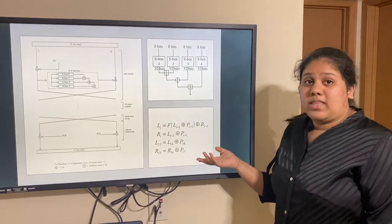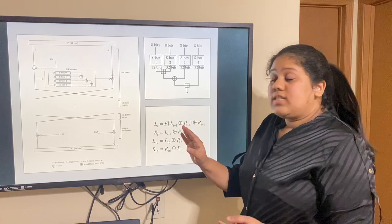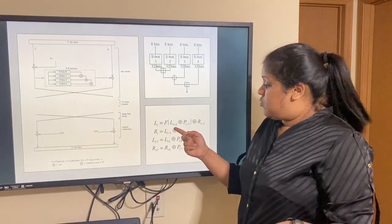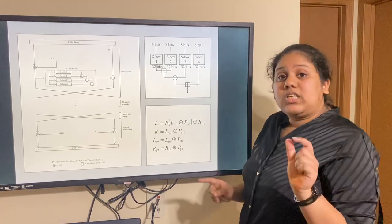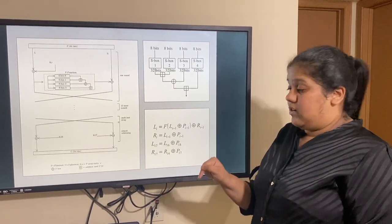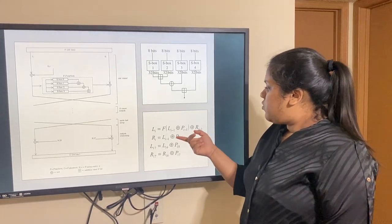Now, this is the mathematical representation. LI is the next round, the left-hand side of the next round. F is the function. LI-1 is the current round. PI-1 is the key that is used for the current round. And RI-1 is the right-hand side of the current round. This is the same thing, that is how R is found out.